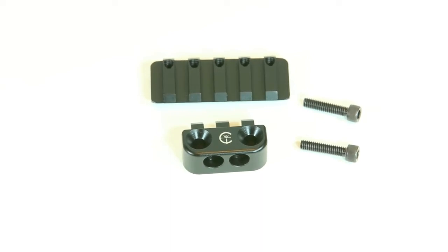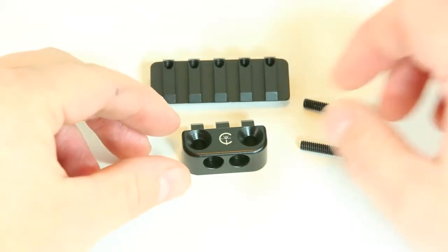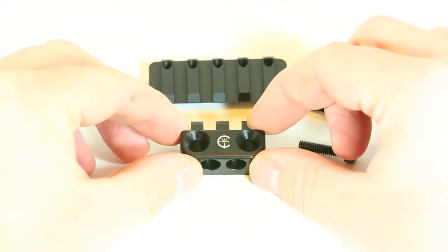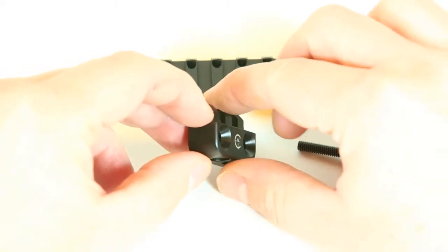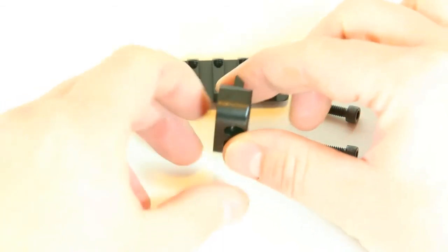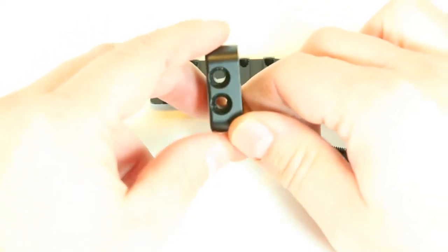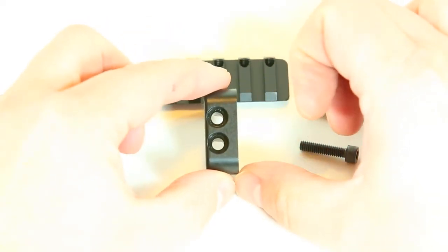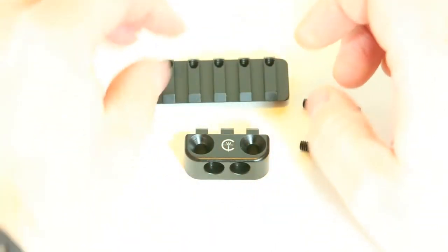So here we have the light mount broken down into just two primary sections. On the bottom you have the proprietary mounting section and above it you have the 1913 Picatinny rail section. The proprietary mounting section at the bottom, the back of it is flat face that would go against your rail. The rail itself or the area that these are mounted on is flat itself. On the bottom you have the two spots that you put your bolts to connect the two sections.